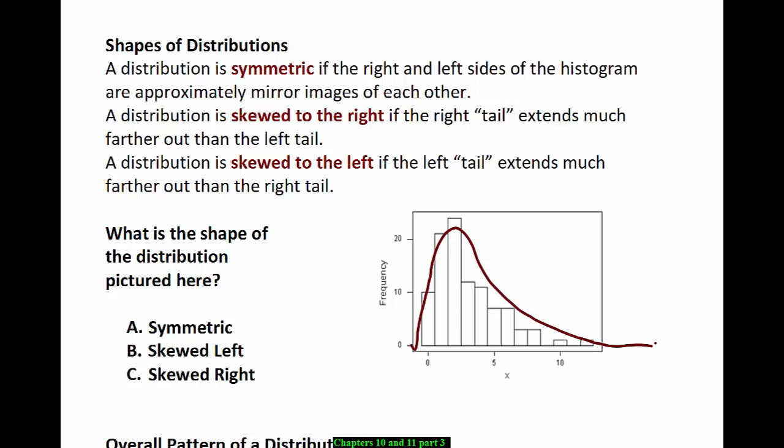the tail would definitely be here on the right hand side of the picture. Since the right tail is longer, we're going to call this a skewed right distribution.